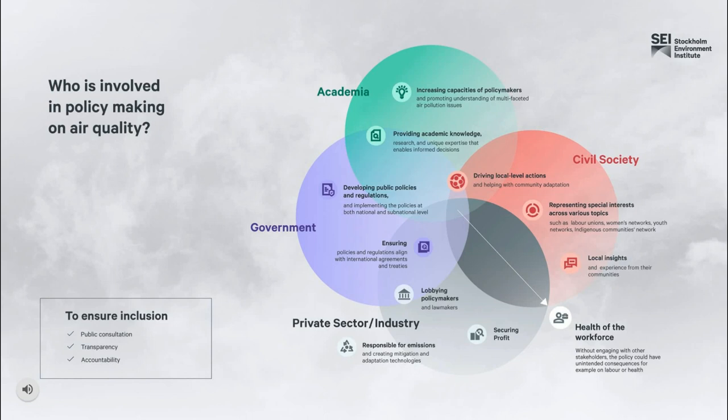To ensure inclusion in the process of policy-making, there should be public consultations, for example through information sessions to get feedback from the general public. Consultations with representative groups, such as labor unions and women's networks, are recommended. In addition, transparency about donations to government and for what purpose is necessary.